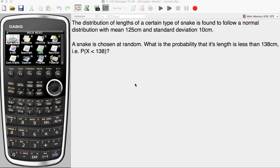The distribution of lengths of a certain type of snake is found to follow a normal distribution with a mean of 125 centimeters and a standard deviation of 10 centimeters. If we choose a snake at random, what's the probability its length is less than 138 centimeters?